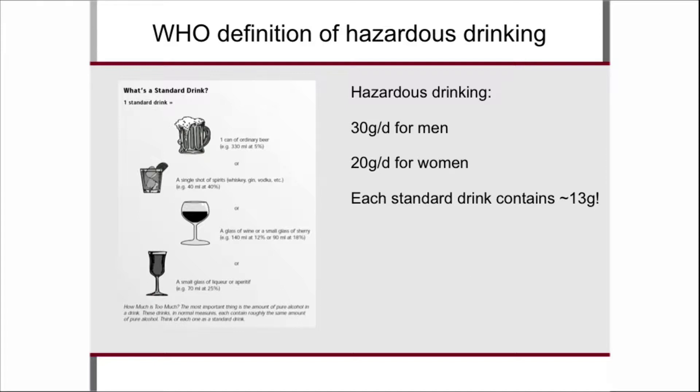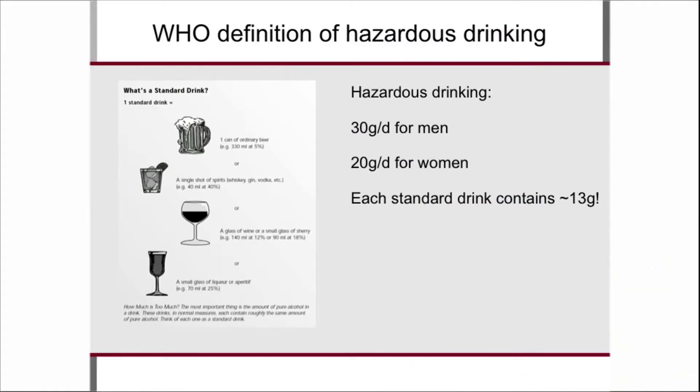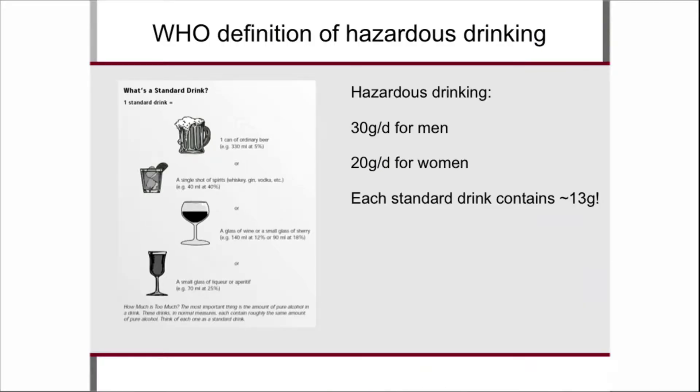What is 30 grams? It's about two and a half small beers (300 cl), or two and a half small glasses of wine, or two to three shots. It doesn't matter if someone is drinking schnapps, vodka, Becherovka, or beer — it's the amount of pure alcohol that matters. Each standard drink contains about 13 grams of pure alcohol, so you can see how easily you can reach 30 grams per day.